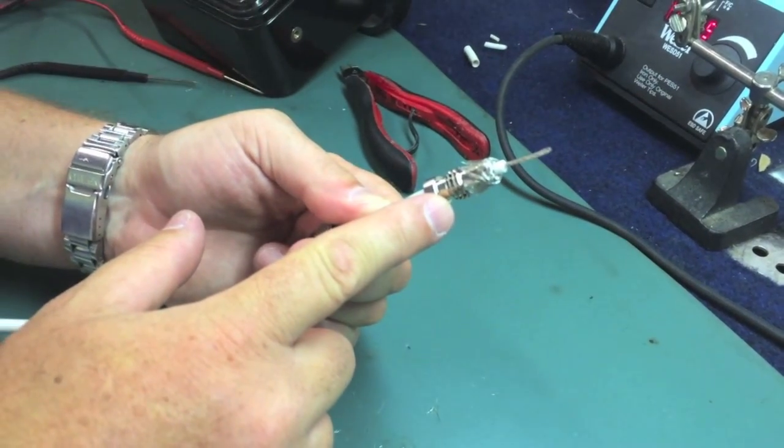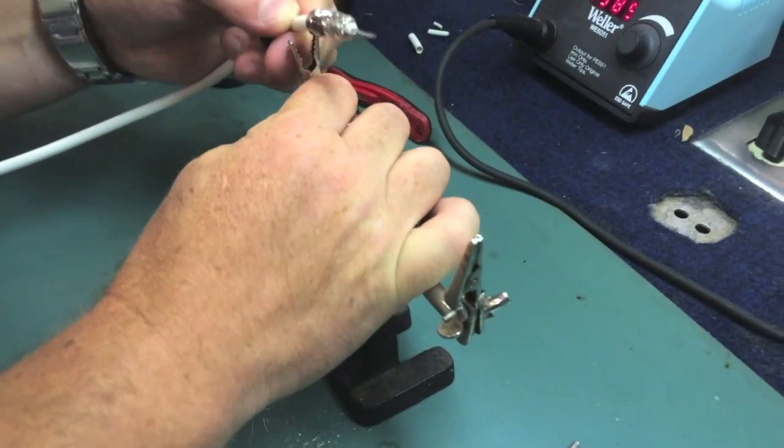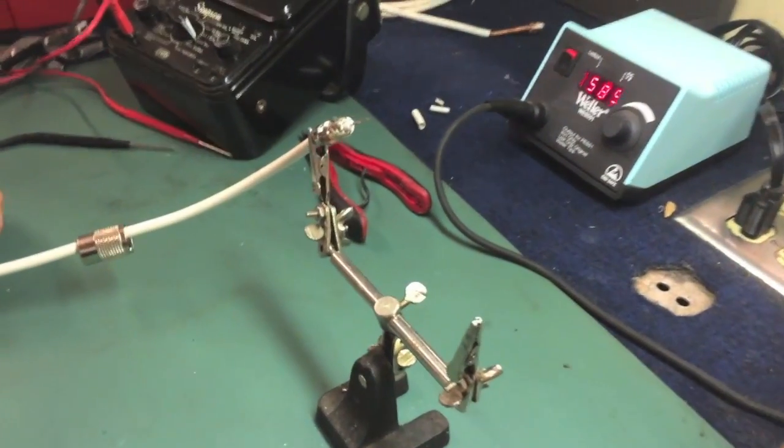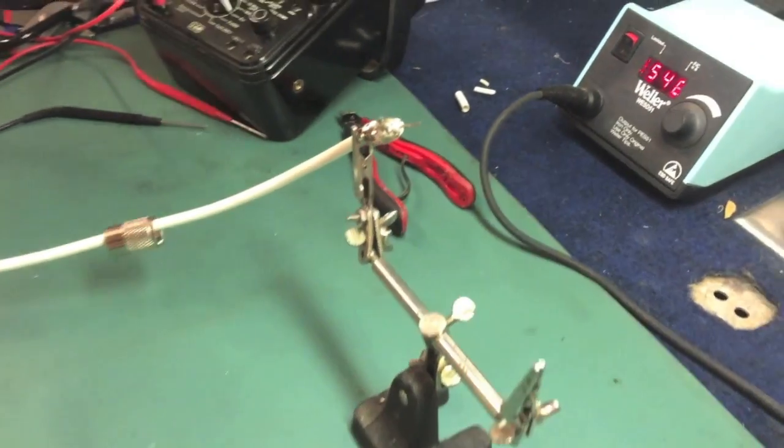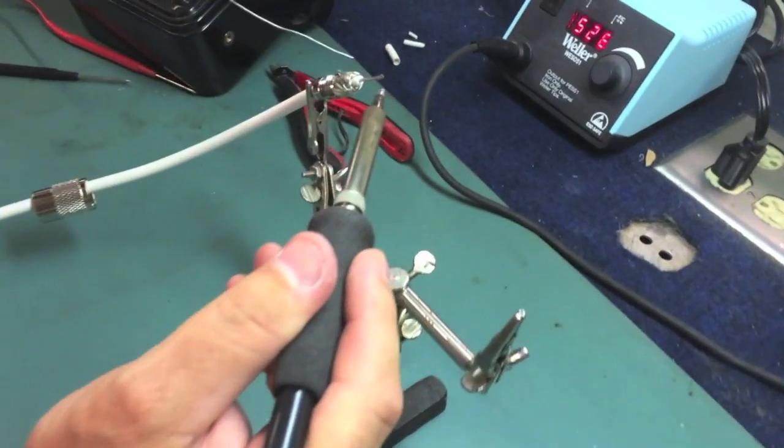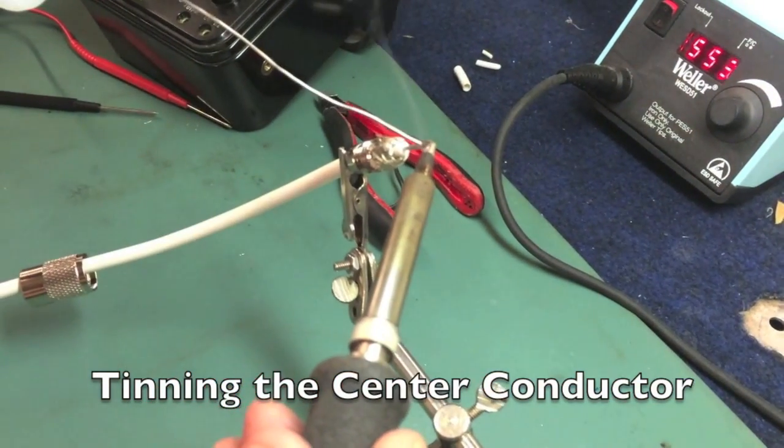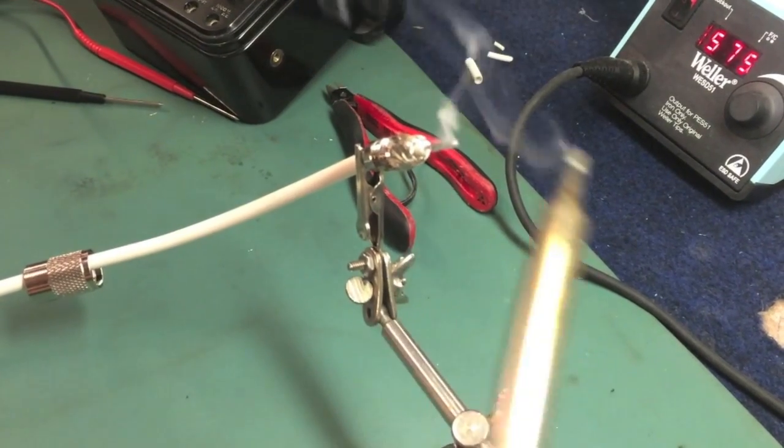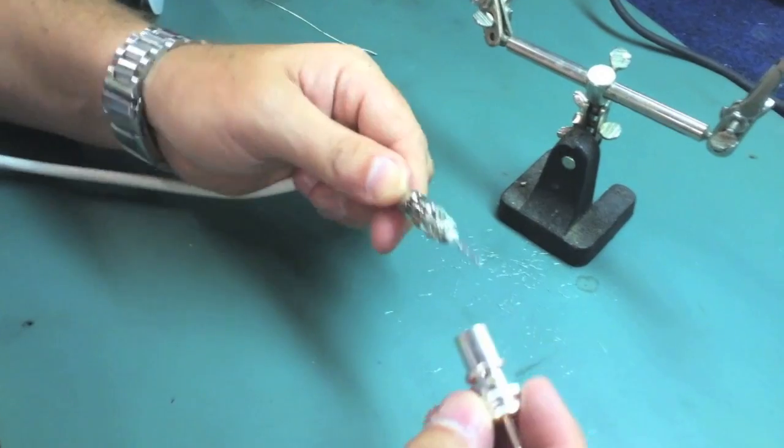Next thing we're going to do is we're going to tin the center conductor with some solder. Now that we've got the center conductor soldered, we're going to take the end fitting itself and we're going to mate it to the adapter.